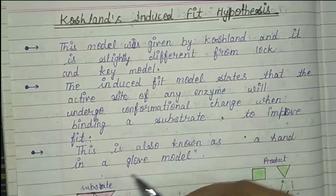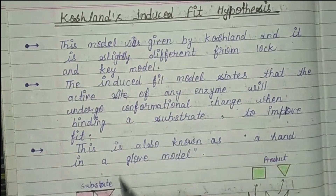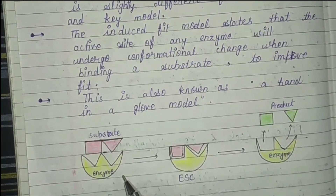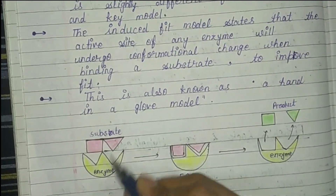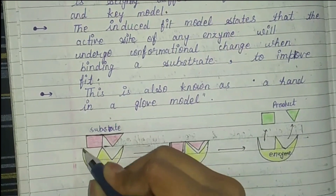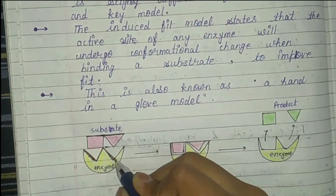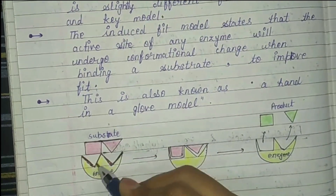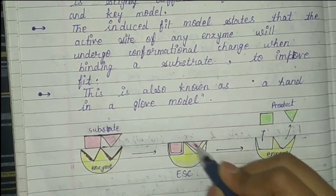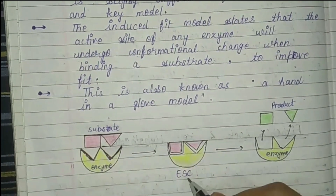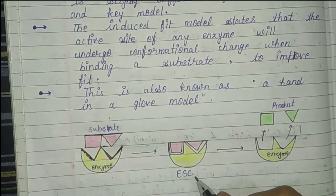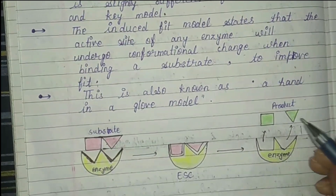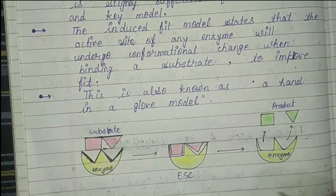Upon binding with the substrate to improve fit — this is also known as the hand-in-a-glove model. Here we have the enzyme and this is the active site. You will see that the shape of the substrate is slightly different from the enzyme active site, so the active site adjusts. The substrate then forms the enzyme-substrate complex, and the product is released while the enzyme returns to its original state. This is the key change between Koshland's induced fit hypothesis and Fischer's hypothesis.